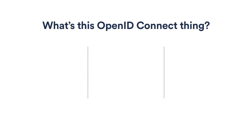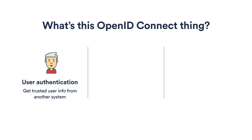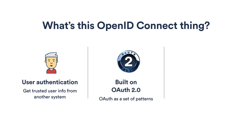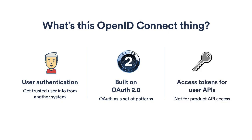One other thing I get asked a lot about is OpenID Connect — what's the difference from OAuth? OpenID Connect is all around user authentication: it allows you to delegate authentication of a user to another system, like logging in with Google or Facebook. It actually has nothing to do with using an API on behalf of that user. The reason it's confusing is that OpenID Connect is built on top of OAuth. OAuth itself is really just a set of design patterns — there's nothing really specific about API authentication or authorization about it. So OpenID Connect has access tokens and so forth, but just remember those tokens are about dealing with user identity from the identity provider, not about accessing APIs on behalf of the user.